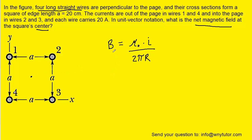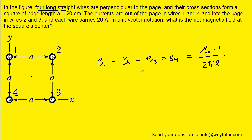Since there are four wires, we would have to make four calculations, one for each wire. However, the distance from each wire to the center of the square is the same, and the current in each wire is also the same — it's 20 amps. Since the current and the distance are the same, we really only have to make one preliminary calculation to get the magnetic field produced by each of the four wires. So symbolically, we can set each magnetic field equal to each other and then set it equal to this expression.